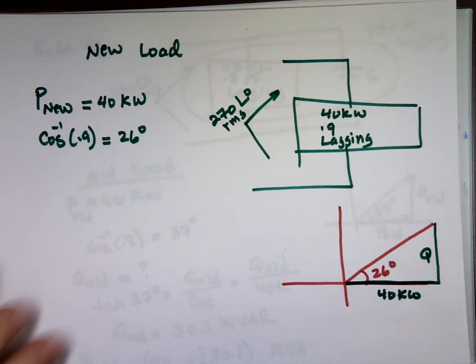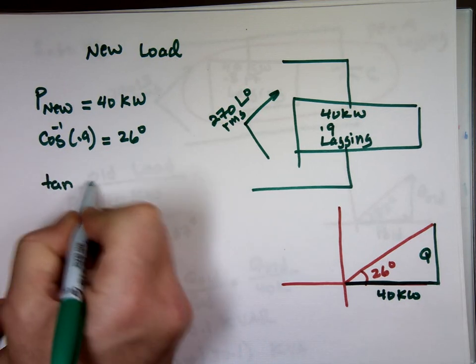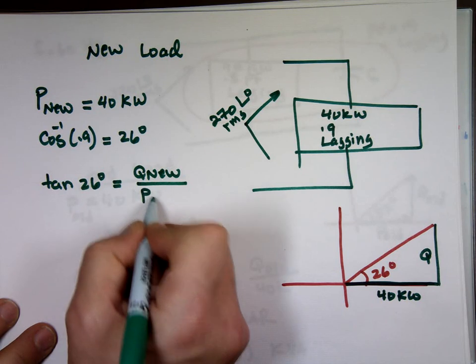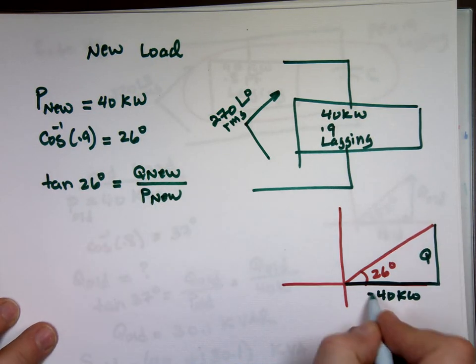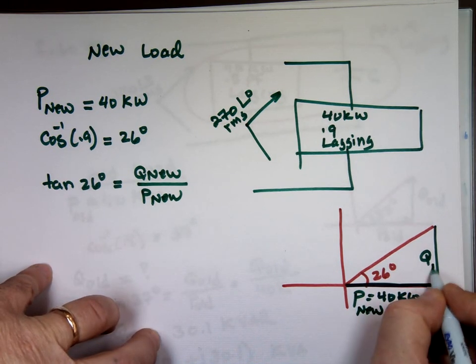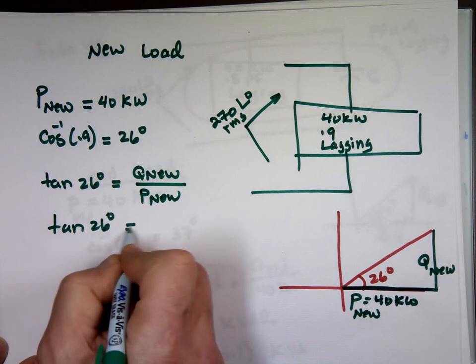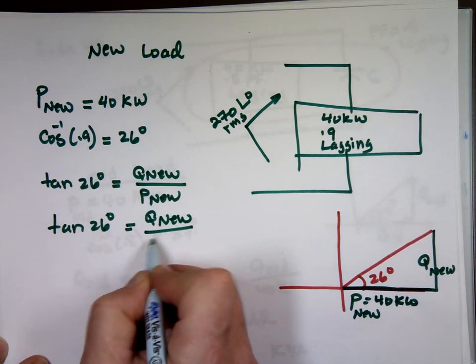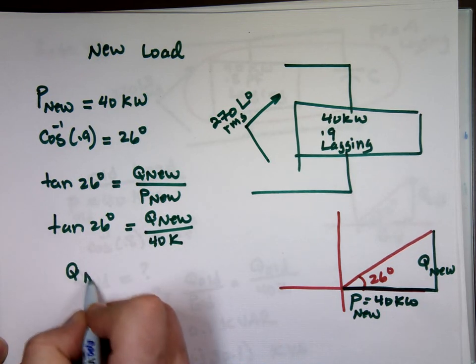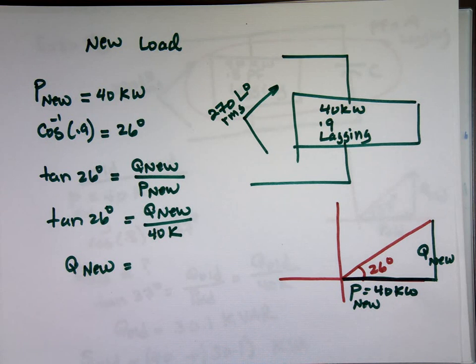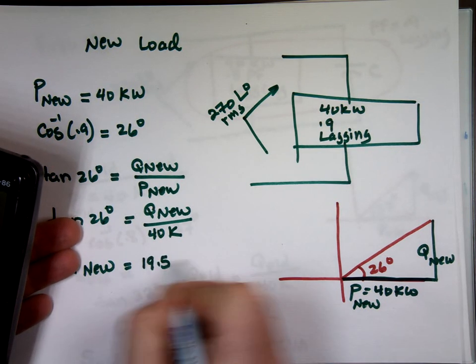The same thing. Tangent 26 degrees equal q nu over what? p nu. The opposite over the adjacent. Tangent 26 equals q, the new value of q, over 40k. Can we get what q nu is? Tangent 26 degree times 40,000. 19.5k var.